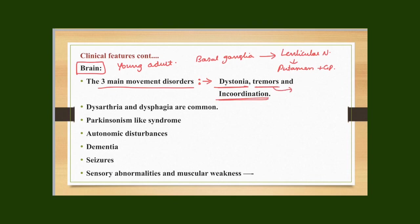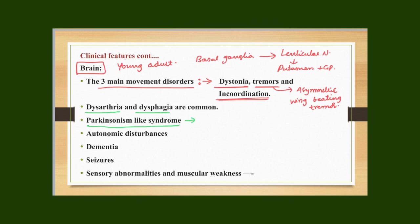The tremors are asymmetric. Dysarthria and dysphasia are also common in Wilson's disease due to involvement of cranial nerves. The patient also develops a Parkinson's-like syndrome characterized by bradykinesia, asymmetrical tremor, and rigidity. Autonomic disturbances such as orthostatic hypotension, erectile dysfunction, and sweating abnormalities may also develop.